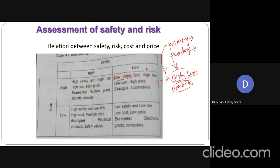That is what is mentioned in the table. If it is low safety and low risk, it will be low cost and low price. For high safety and low risk, cost will be high and price will be medium. This is the relation between safety, risk, cost and price.